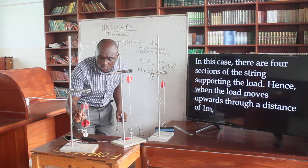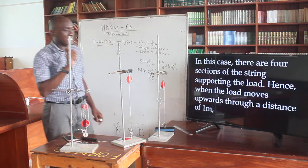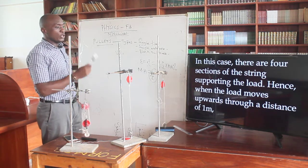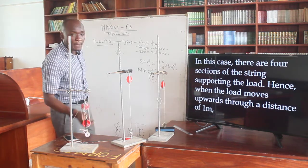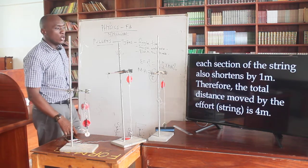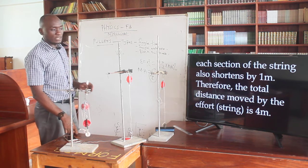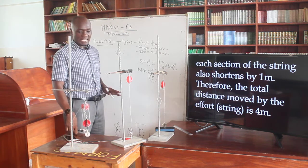But all of these - one, two, three, four - those are the ones responsible for supporting the load. Hence, when the load moves upward through a distance of one meter, each section of the string also shortens by one meter. Therefore, the total distance moved by the effort is going to be four meters.